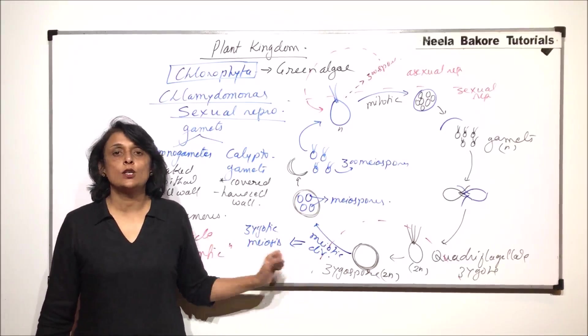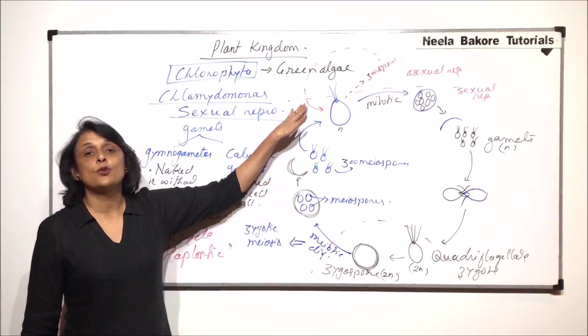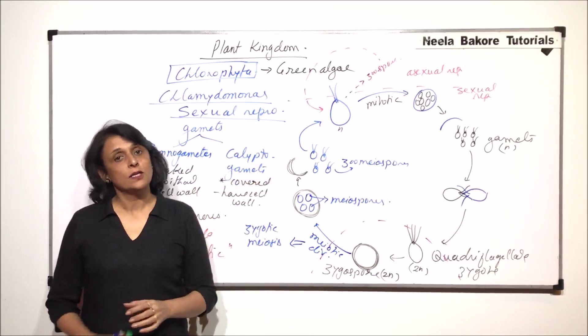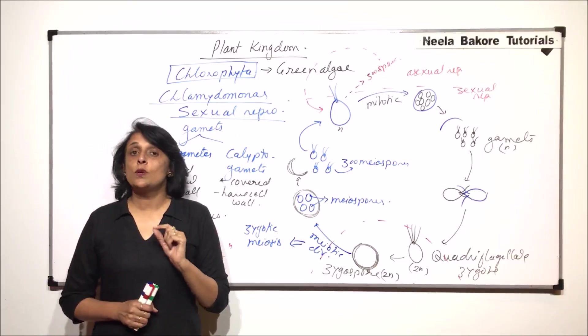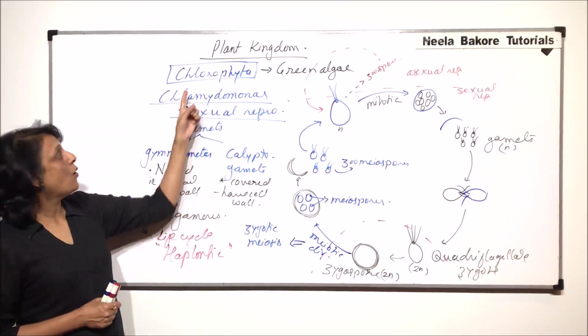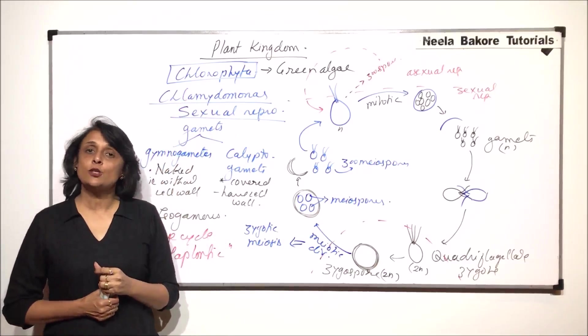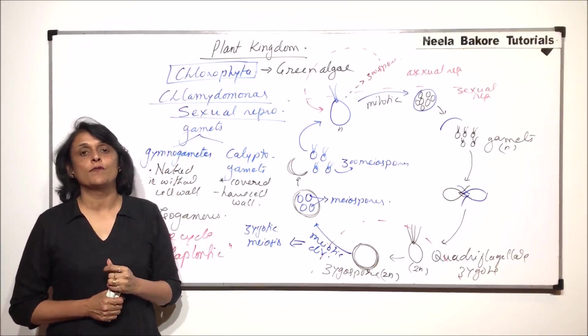We see haplontic life cycle in case of Chlamydomonas and they show asexual as well as sexual reproduction. This was one member of green algae or Chlorophyta. In the next part, we will take up another member of the same group.